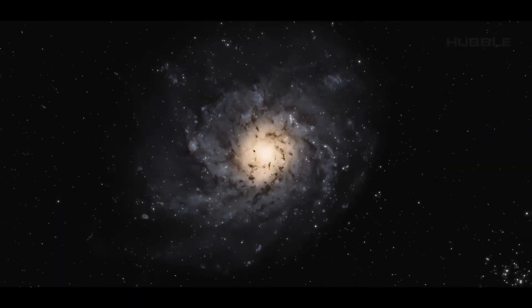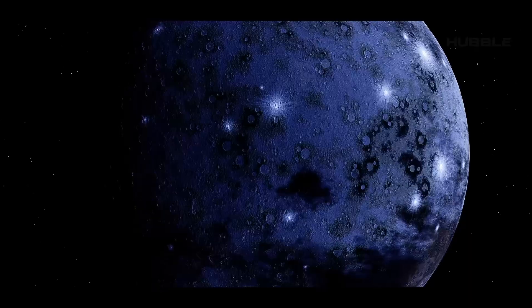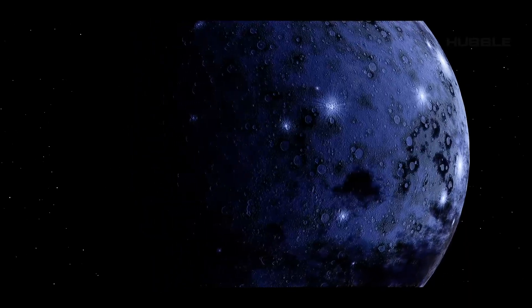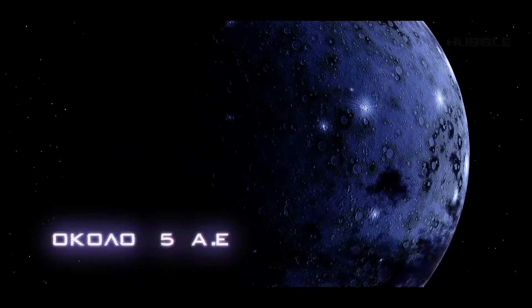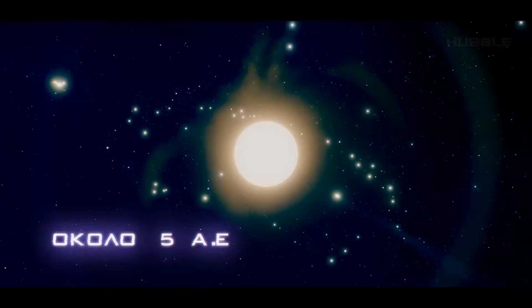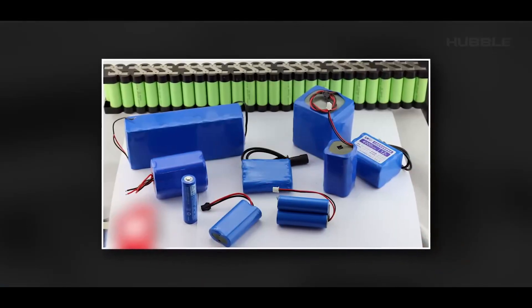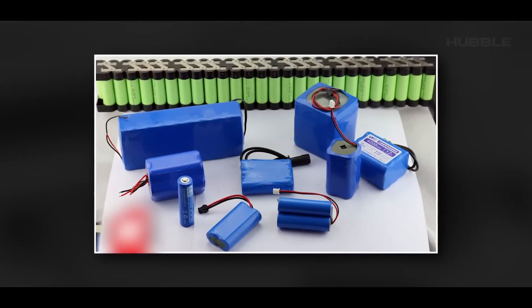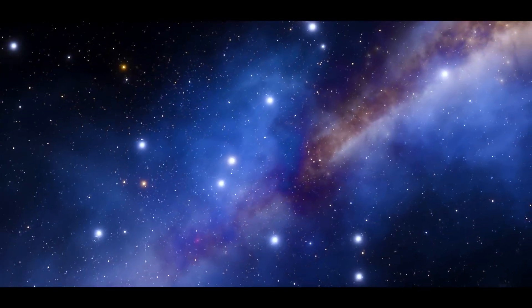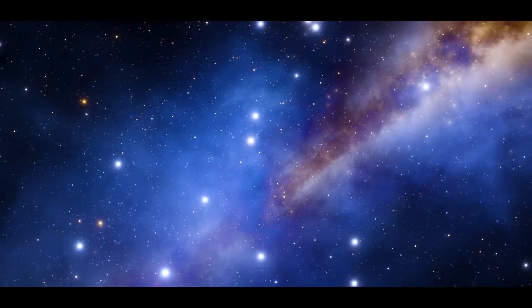But why solar panels instead of radioisotope thermoelectric generators? The thing is, these are innovative photovoltaic cells that can be successfully used even at a distance of about five astronomical units from the sun. However, when the spacecraft passes through the shadow, it will use a backup power source, lithium-ion batteries.